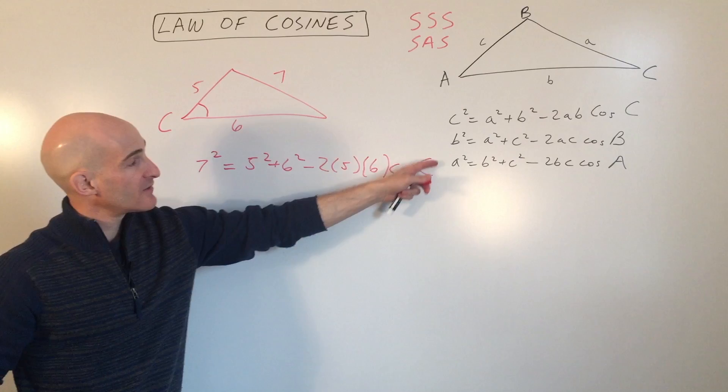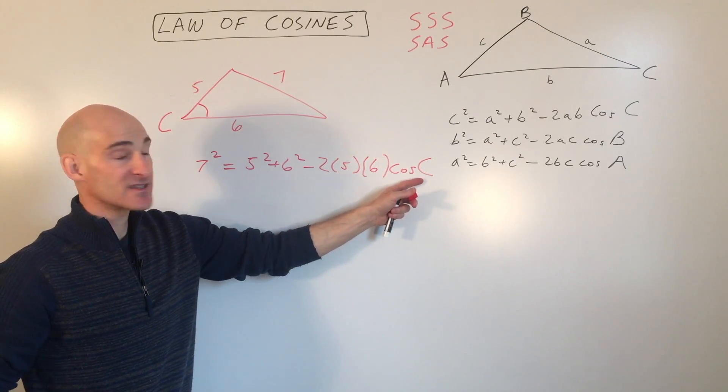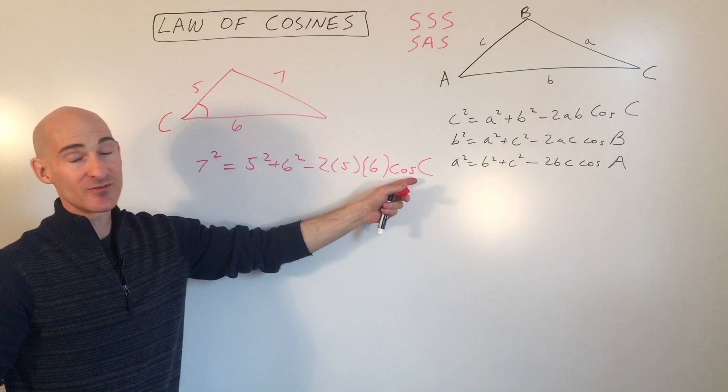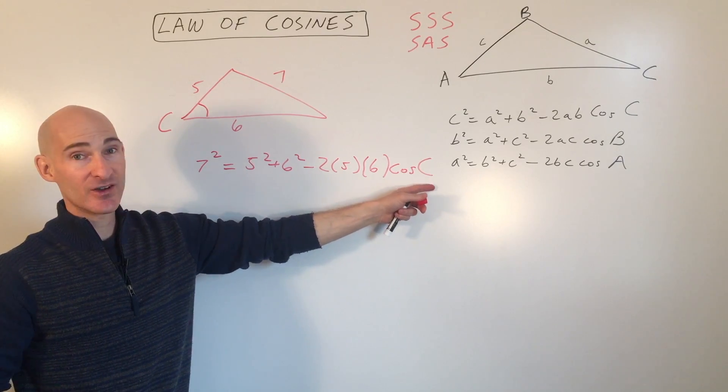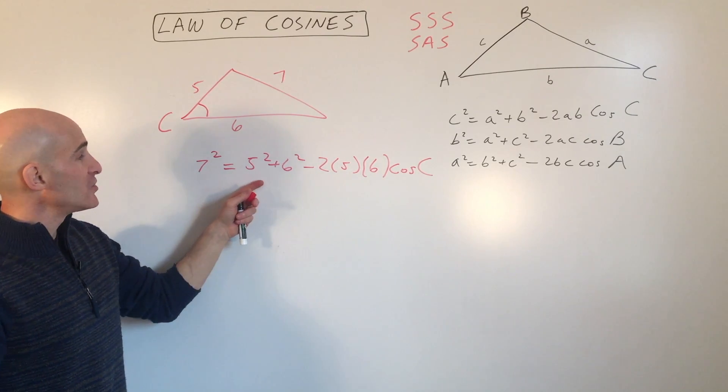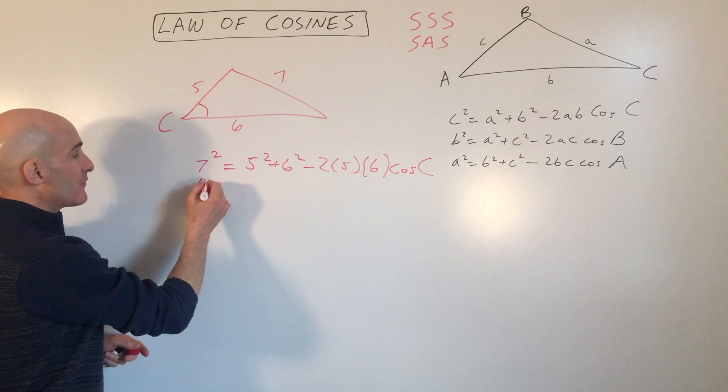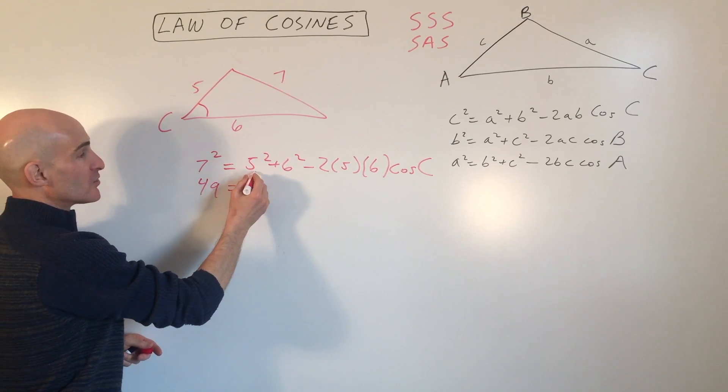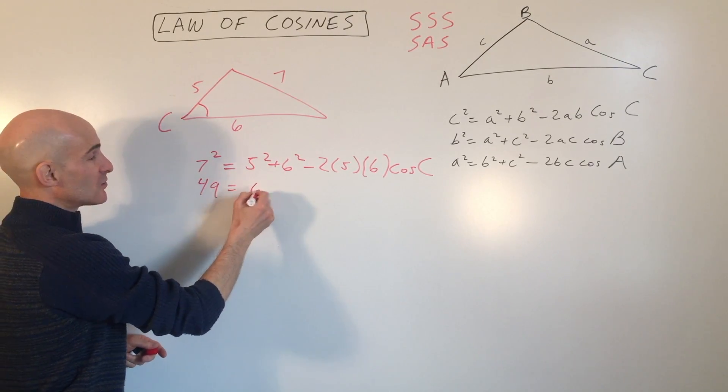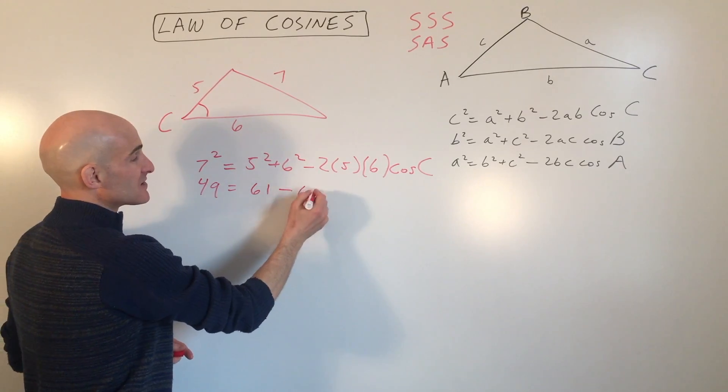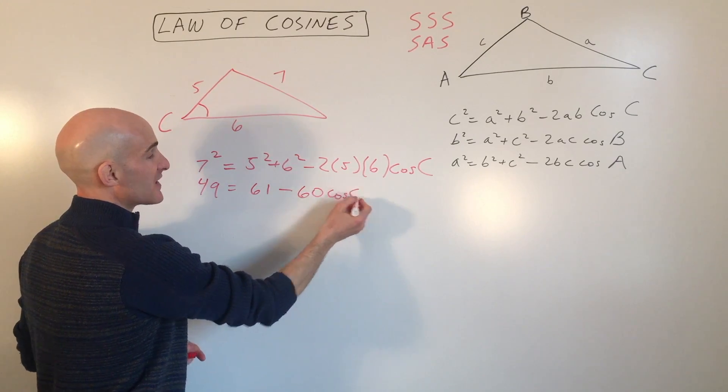Now what you want to do is you want to get this cosine C by itself on one side of the equation and then take the cosine inverse of both sides to solve for angle C. So what we're going to do is we're going to do this in steps. We have 49 equals 25 plus 36, which is 61, minus 60 cosine C.